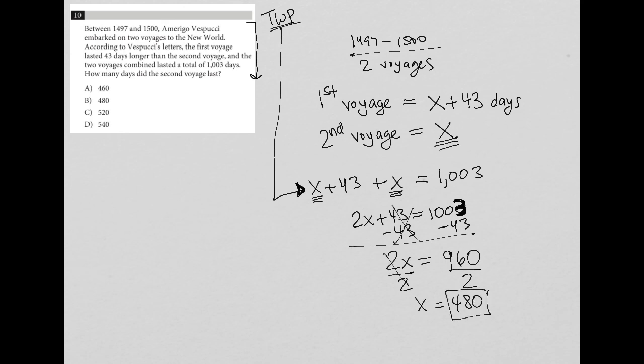Therefore, because X is the second voyage, and the question is asking how many days the second voyage lasted, 480 must be the correct answer, which is choice B.